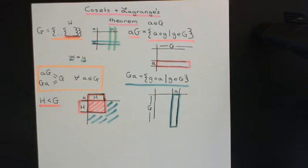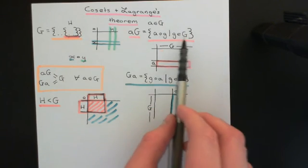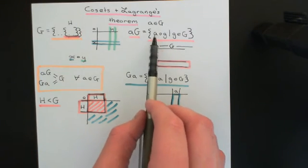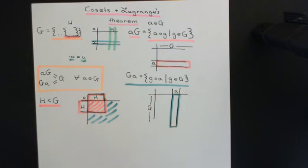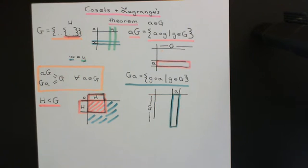Welcome back to this next video in which we are discussing cosets and Lagrange's theorem. So far all that I've told you is just recap, and we've recapped two different concepts: the concept of all elements of the group either left multiplied or right multiplied by a certain element of the group, and the concept of subgroups. Now we're going to combine those two things together to arrive at cosets.